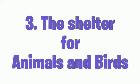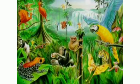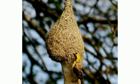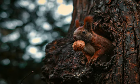Number 3: The shelter for animals and birds. If there are plenty of trees, animals and birds can get their food from them. Similarly, they can build their nests and homes in the trees and remain safe. Therefore, it is necessary to take care of plants.